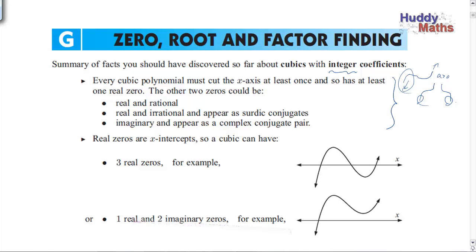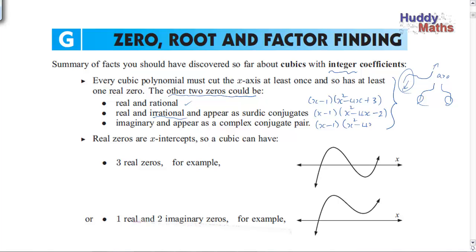So you're going to have a quadratic factor, and that gives you the other two zeros. They could be real and rational - for example x² - 4x + 3 factorises giving two real solutions, 3 and 1. They could be real and irrational, where the second quadratic factor isn't factorisable - something like x² - 4x - 2, where b² - 4ac is not a perfect square. And remember, we can have complex roots hiding in that quadratic factor - something like x² - 4x + 5, which gives a discriminant less than zero and therefore complex conjugates.